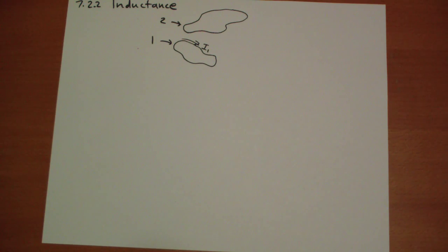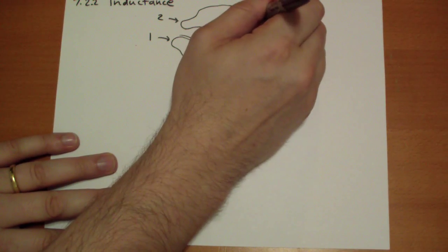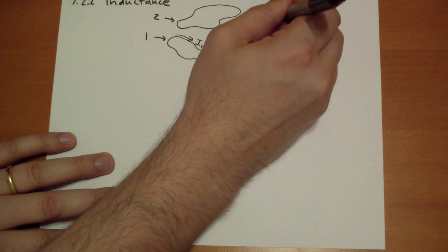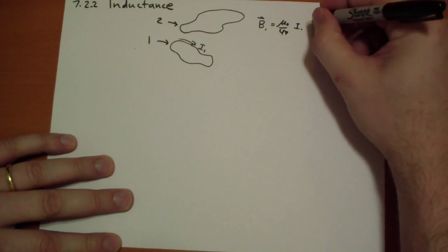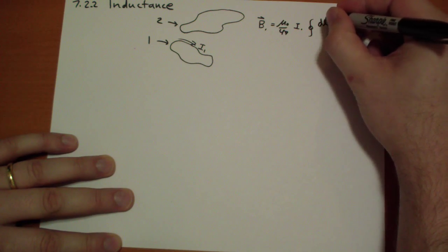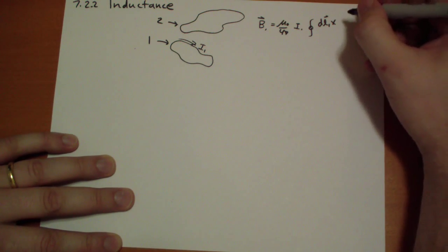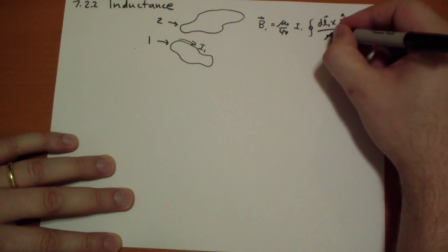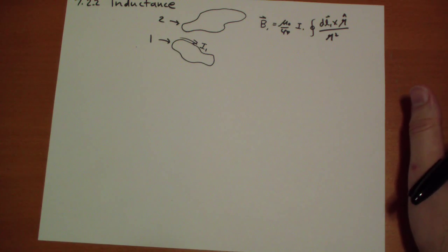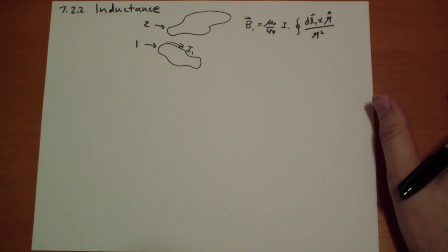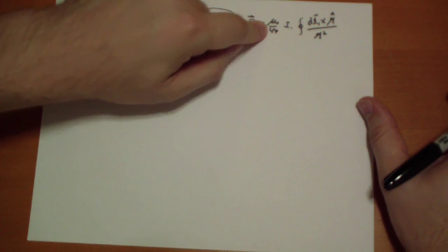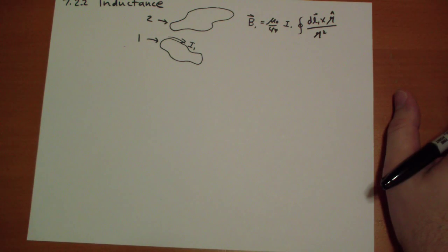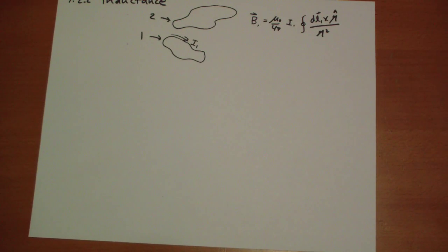The interesting thing is that if we write down a formula for how the magnetic field is created, the B vector due to the current in 1 is going to be equal to mu naught over 4 pi, the current running through 1, and then the closed path integral of dL1 vector cross the R vector all over R squared. And that's the simple Biot-Savart law. You'll notice that the magnetic field here is proportional to the current, and then there's these components that depend only on geometry.